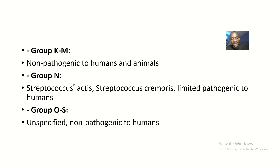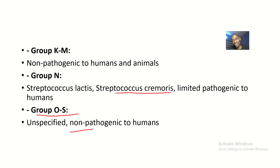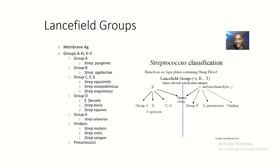Groups A through M are generally non-pathogenic to humans and animals. In Group N we have Streptococcus lactis and Streptococcus cremoris, which have limited pathogenicity to humans. Groups O through S are unspecified and non-pathogenic to humans.